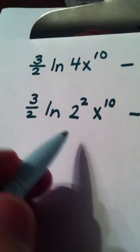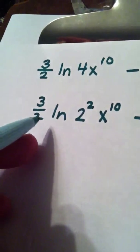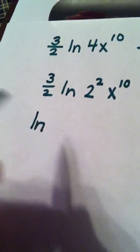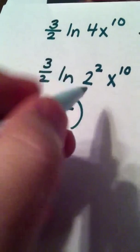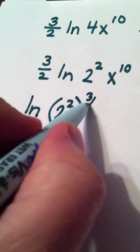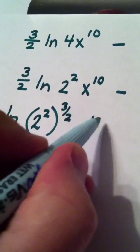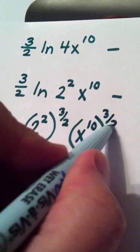Let's focus here. This 3 halves has to get put back as a power. You know, it's the power rule backwards. I have the natural log of, I have 2 squared, but I'm going to be raising it to the 3 halves power.